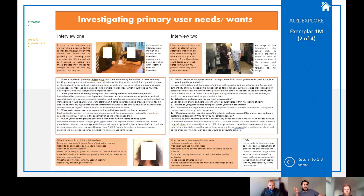So why are we doing 1.3? Why is it important to talk to these people? Well, in 1.2 you've established your design brief — the starting point for your project. You now know what you're looking at doing and hopefully the direction you're going. The starting point for 1.3 is really to find out more about the stakeholders or the people that could be involved or affected by your product.